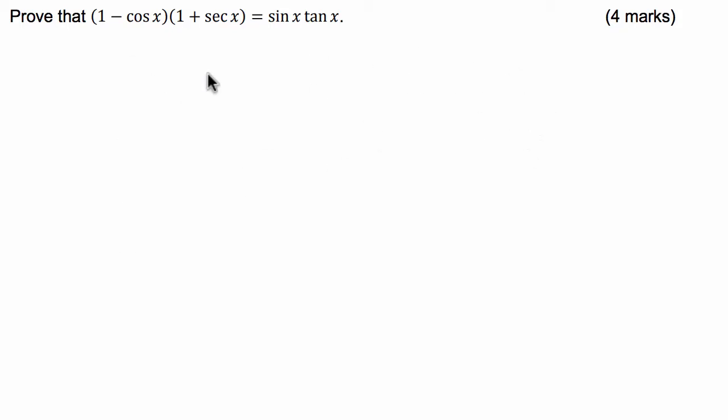G'day guys, we've got a trigonometric identity problem for you today where we've got to prove that 1 minus the cosine of x times 1 plus the secant of x has to equal sine of x times tan of x.